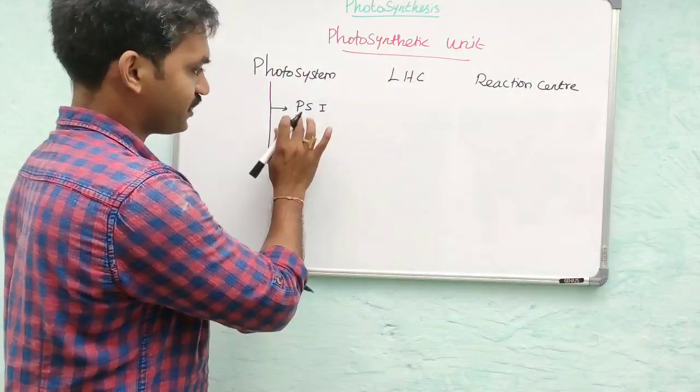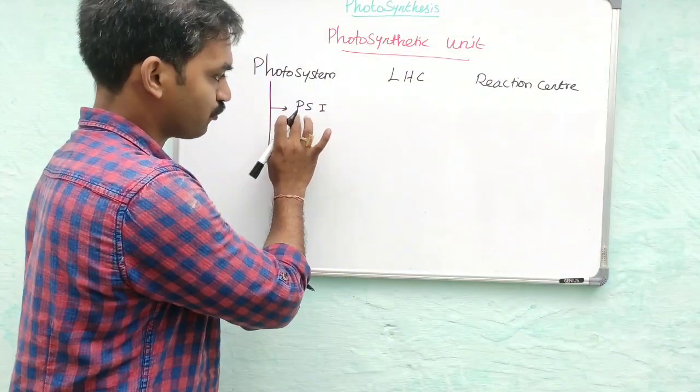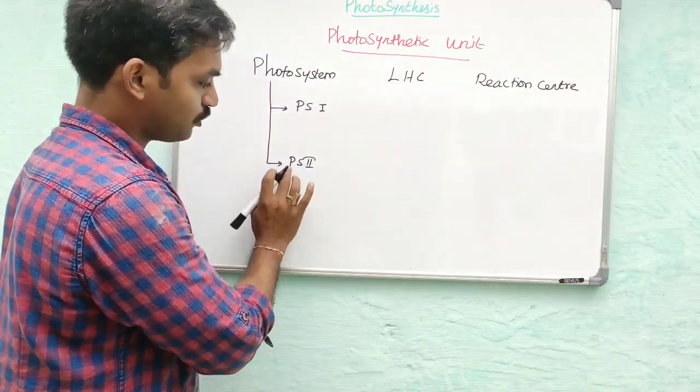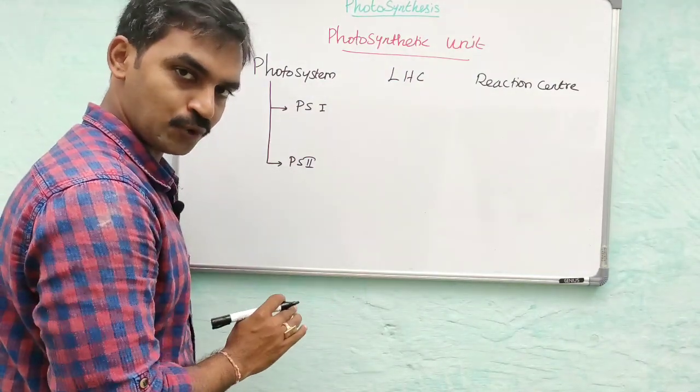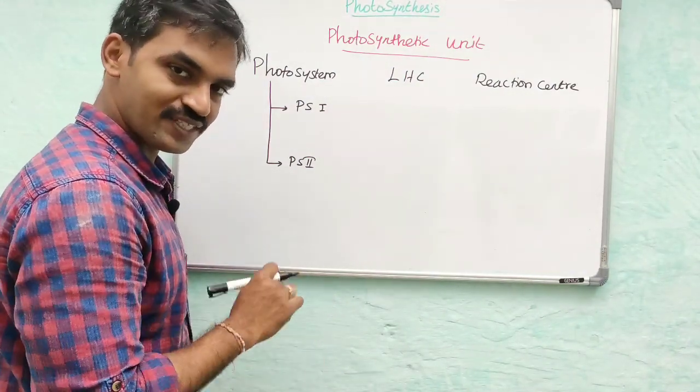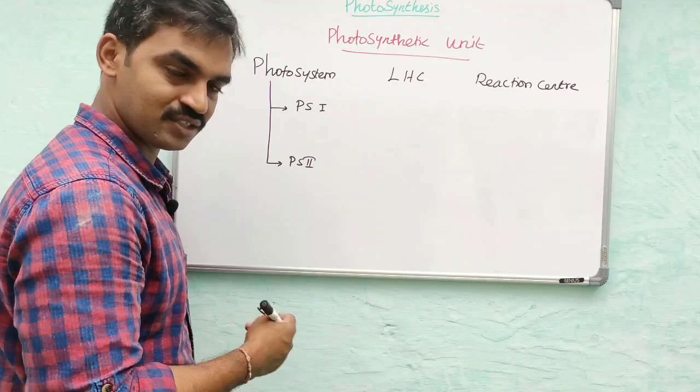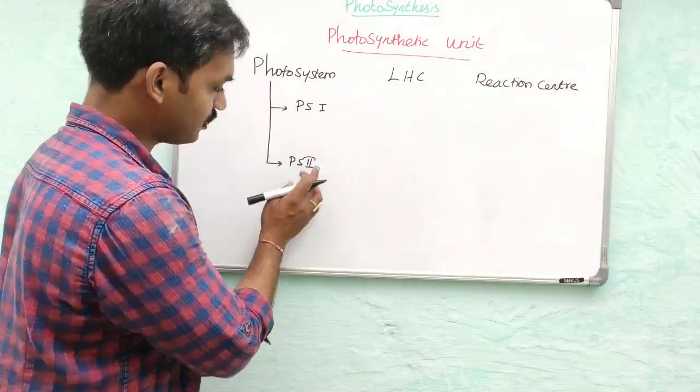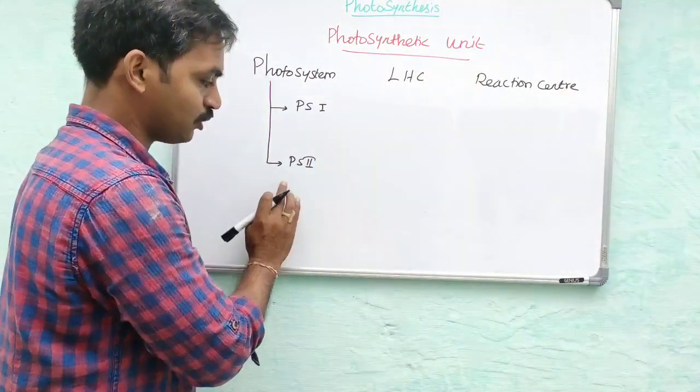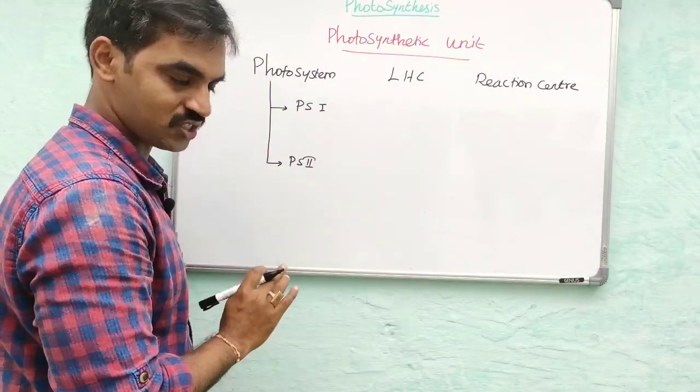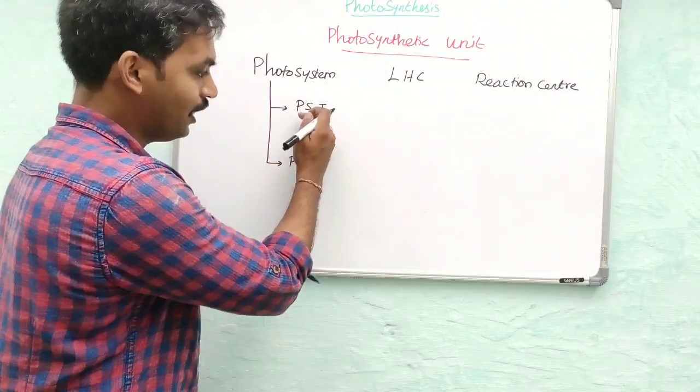In chronological order, the first photosystem is PS1 and the second is PS2. However, in the photosynthetic unit, the first reaction occurs in PS2, followed by PS1.